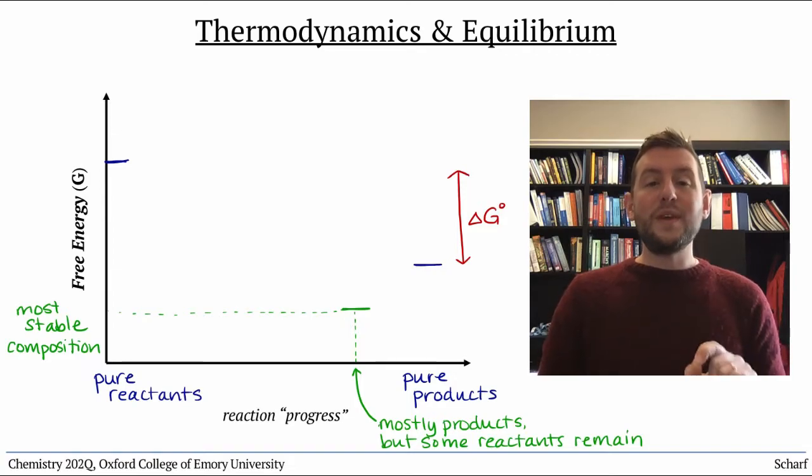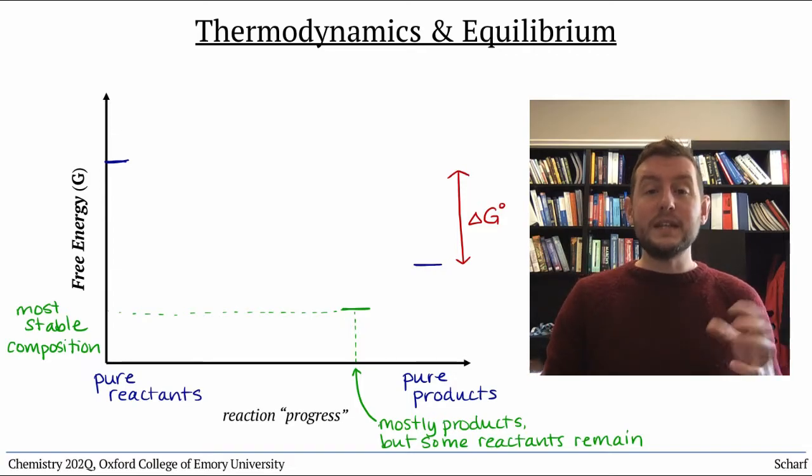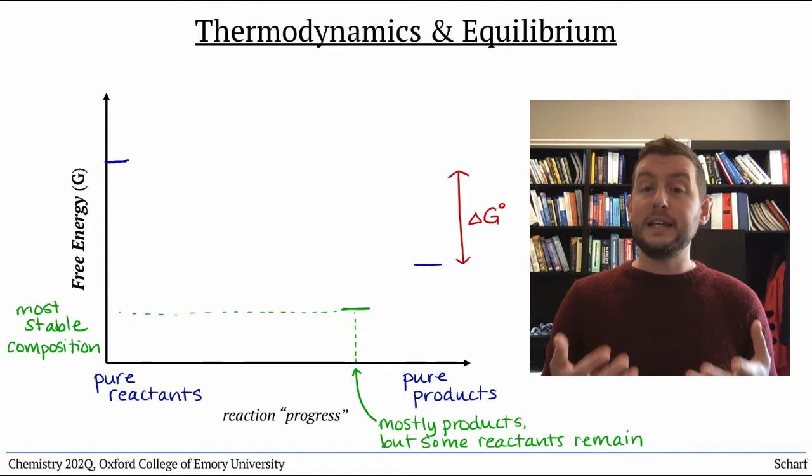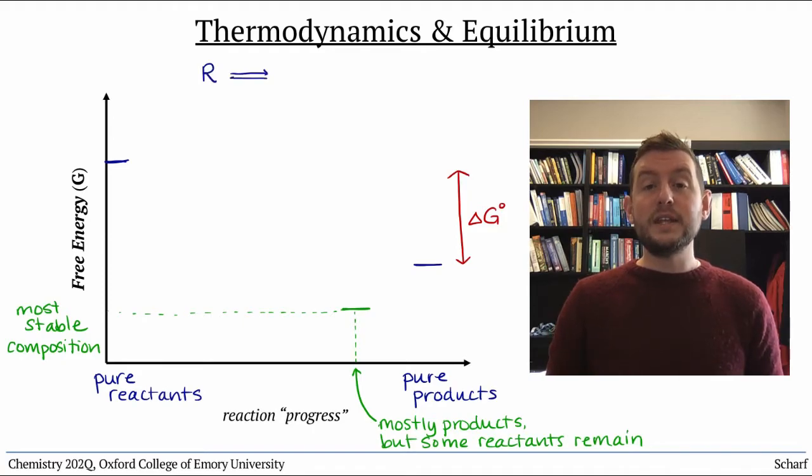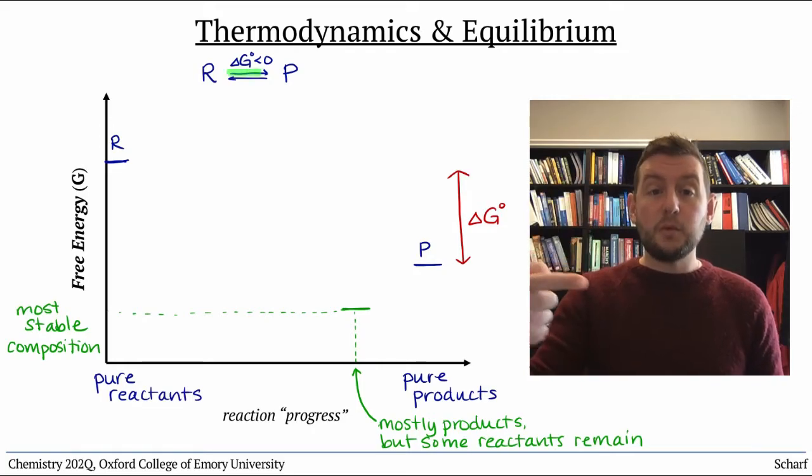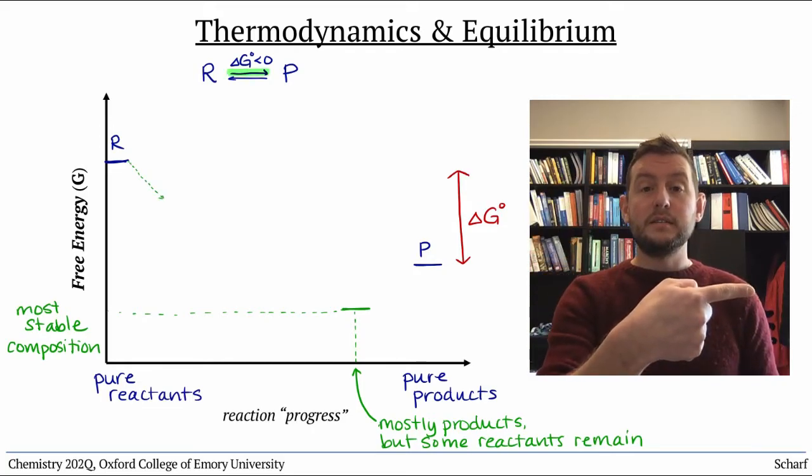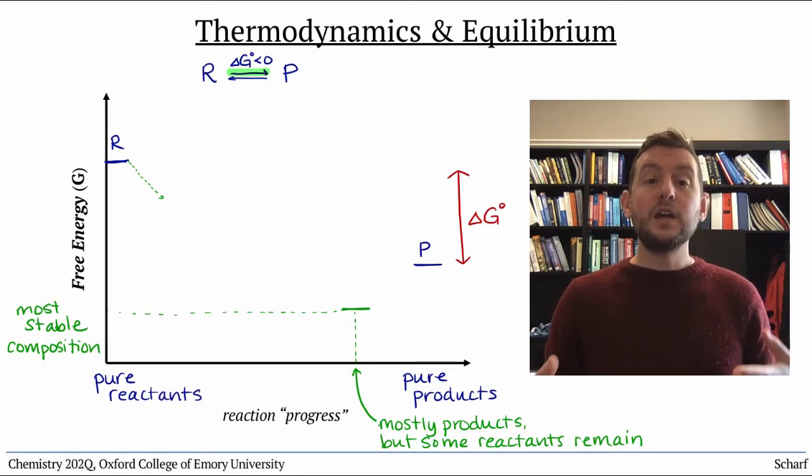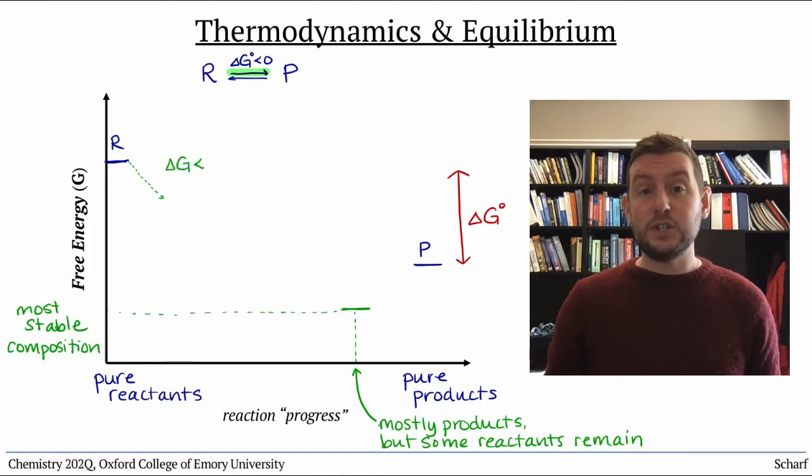Delta G without the naught represents the driving force of a reaction at a given moment, given a particular set of conditions. If you have a reaction that is spontaneous as written, then if you start with only reactants, it will proceed to the right. That is, given those conditions, the reaction will be spontaneous in the forward direction, and will have negative delta G.